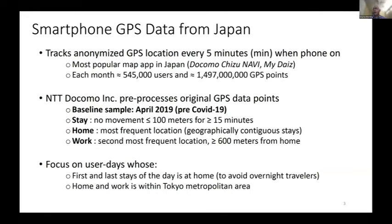Regarding our data: we use GPS data from Japan. Our data come from a very popular local mapping application in Japan. A distinct advantage relative to other smartphone data is that most smartphones only track your location when a particular app is running. Whereas for us, any user who downloads the app from the very beginning has to agree to share location information — not only when the app is running, but whenever the phone is switched on. Every five minutes, whenever the phone is switched on, we know the location of anyone who has downloaded that mapping application, so we don't have to worry about selection into using the app.